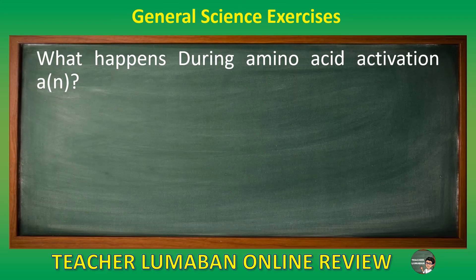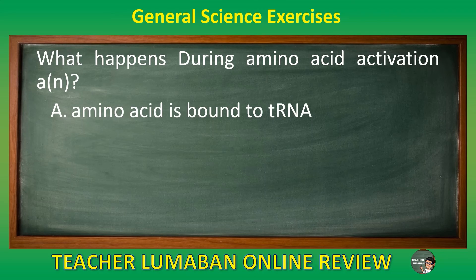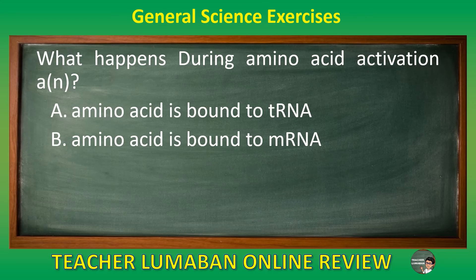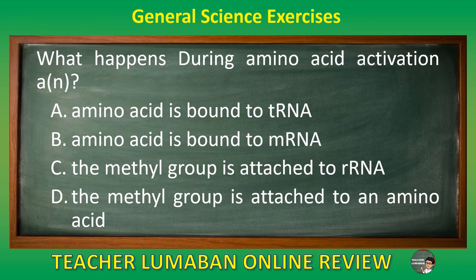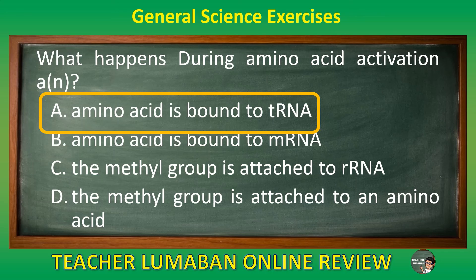What happens during amino acid activation (AN)? Letter A amino acid is bound to tRNA. Letter B amino acid is bound to mRNA. Letter C the methyl group is attached to rRNA. Letter D the methyl group is attached to an amino acid. The correct answer is letter A: amino acid is bound to tRNA. During amino acid activation (AN), an amino acid is bound to tRNA.